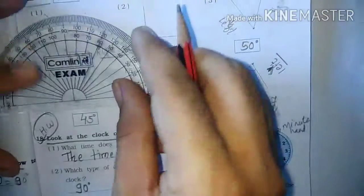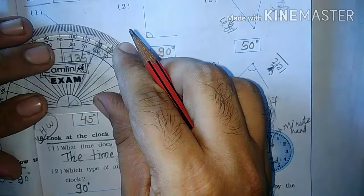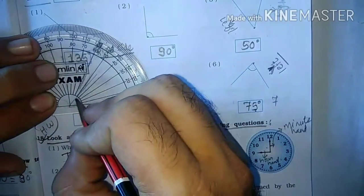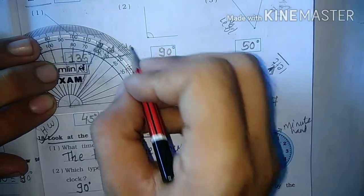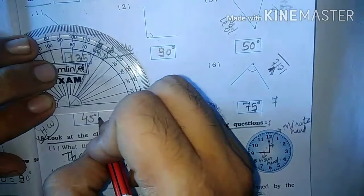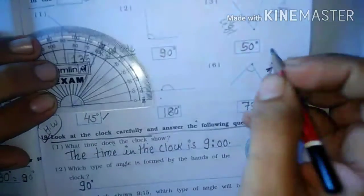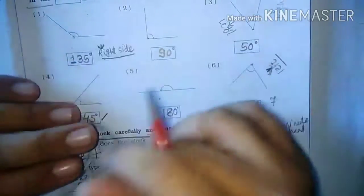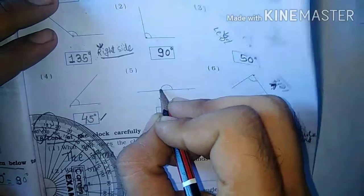For this angle measurement, keep your protractor here and see where this line is going. It is between 40 to 50 — this is 45 degrees.